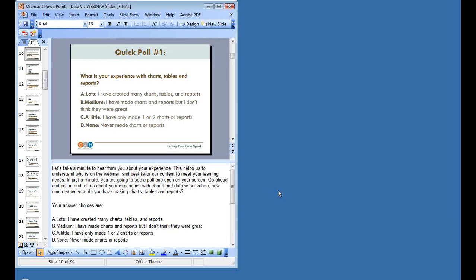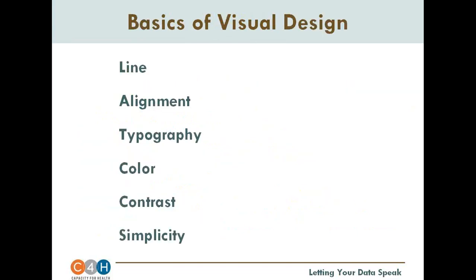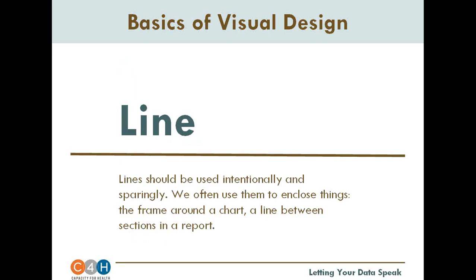After a brief technical difficulty, we're now looking at the basics of visual design — a six-item list of elements I find important. These different items help the eye unify or distinguish elements. Lines help people distinguish elements, separating one thing from another. My favorite kind of line is actually white space — negative or white space can separate items really well without adding to the busyness of a presentation, report, or chart.